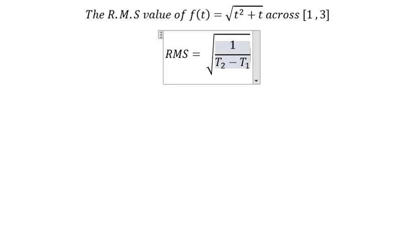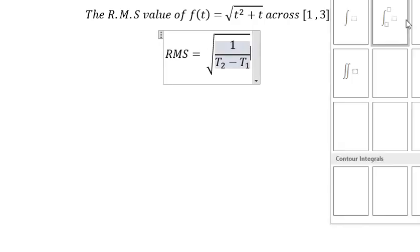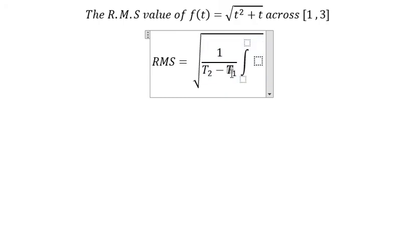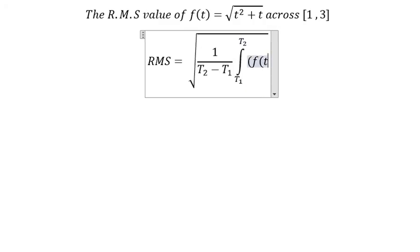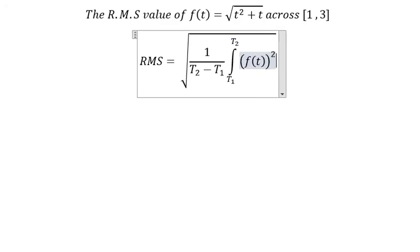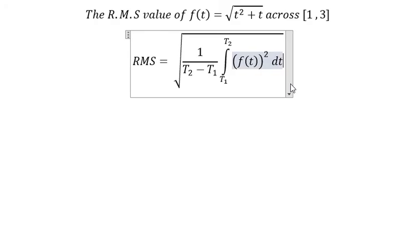And we have the integral from t number 1 to t number 2, and we have f to the power of 2 dt. And that is the formula of root mean square.